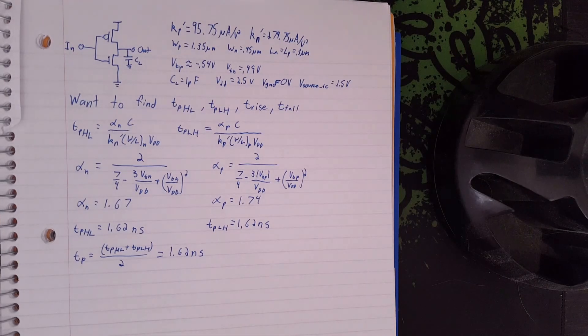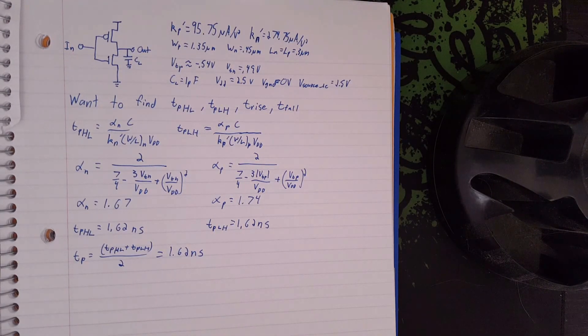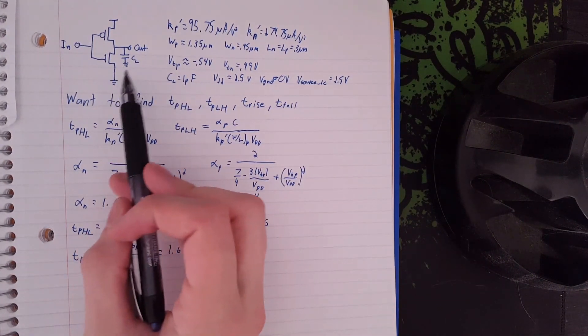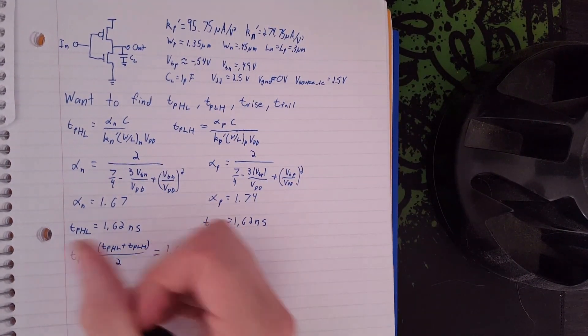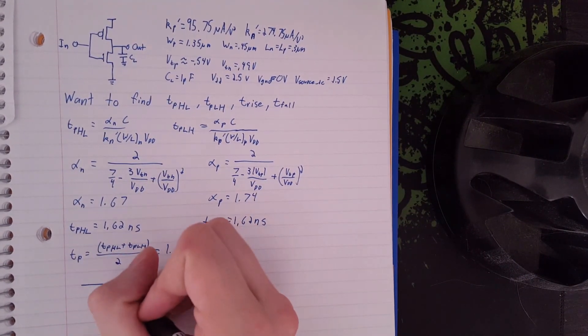Now we need to find the rise time and the fall time. So to do that, we're going to remember that the curve of the transient response to this is going to be exponential. You're going to have an input that looks like this.